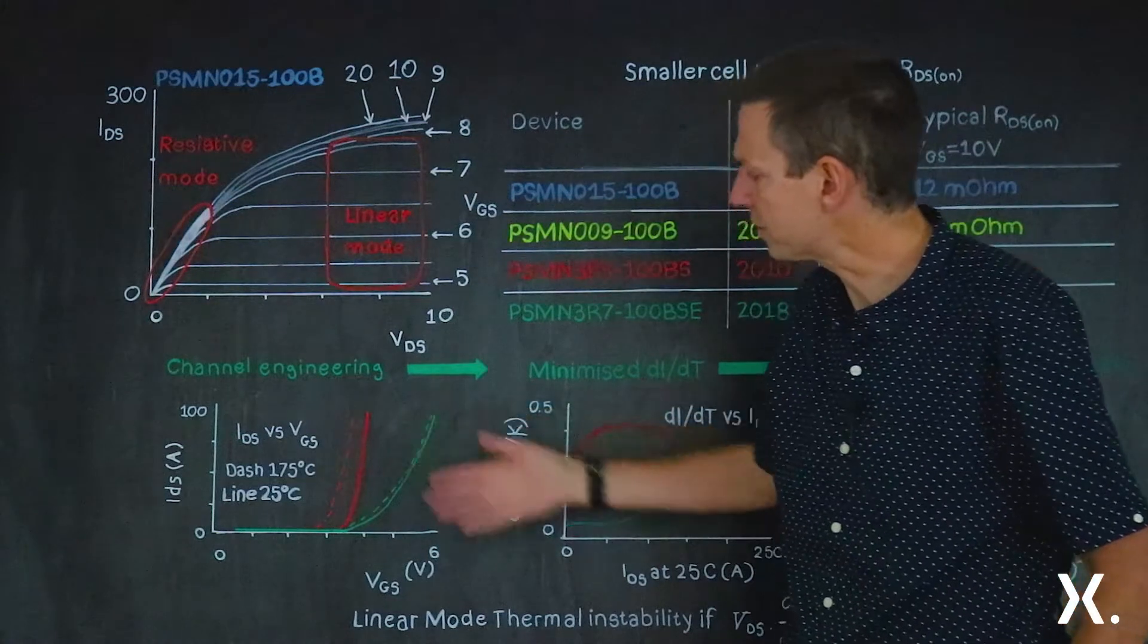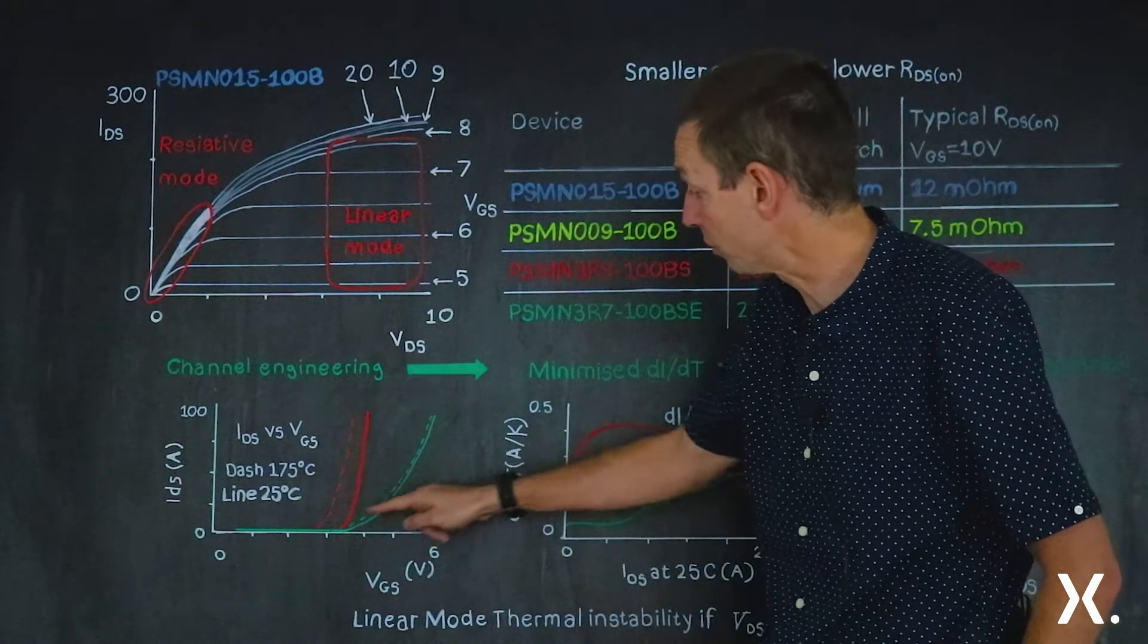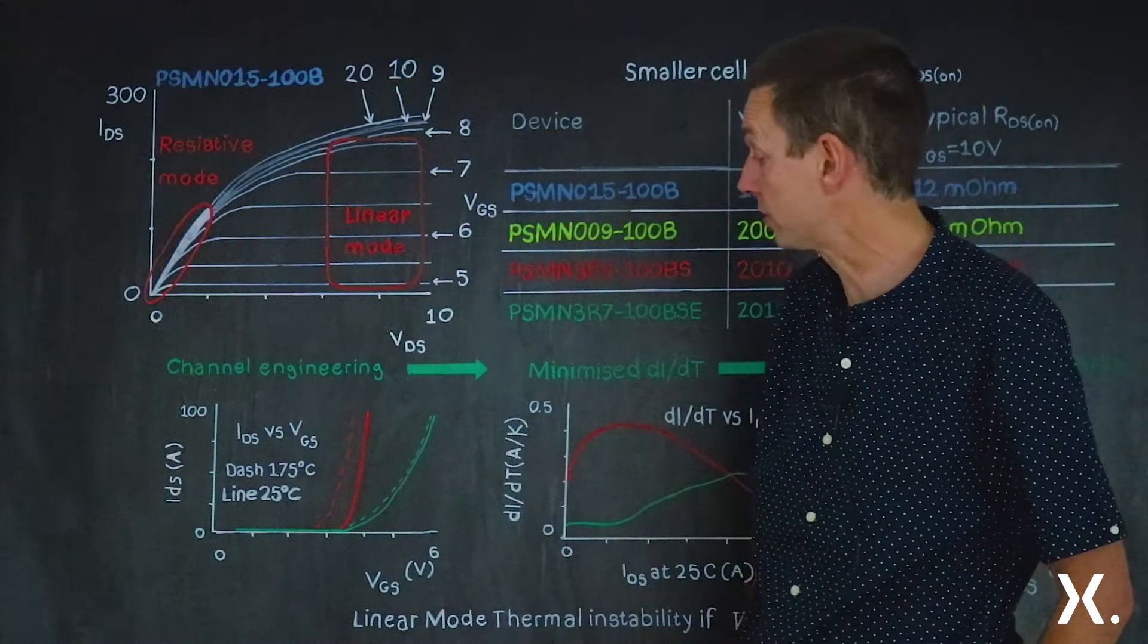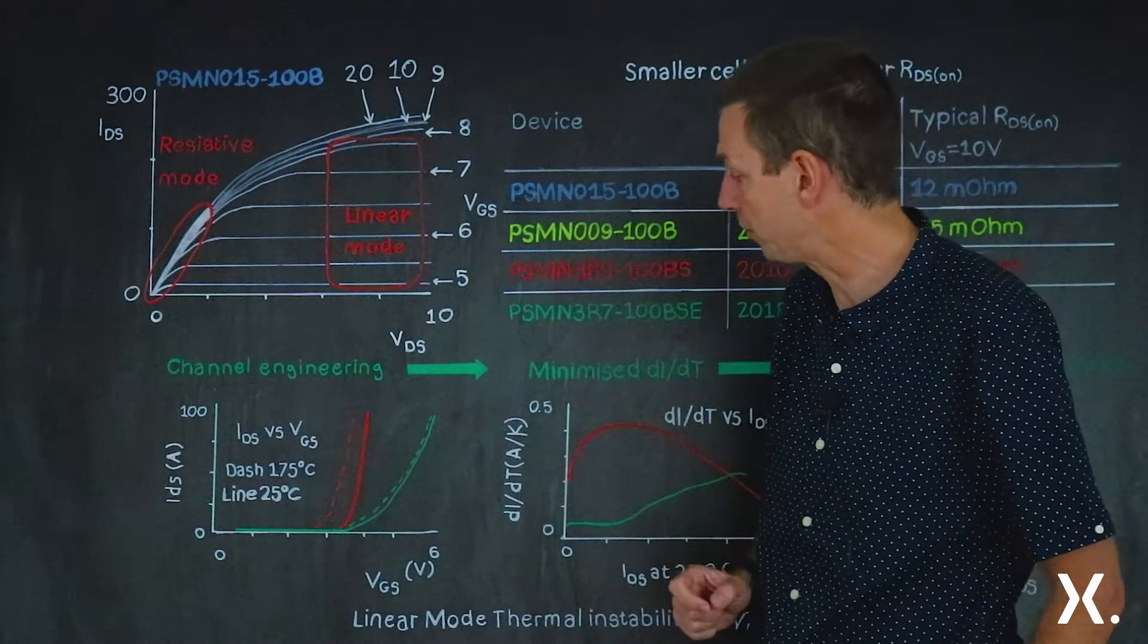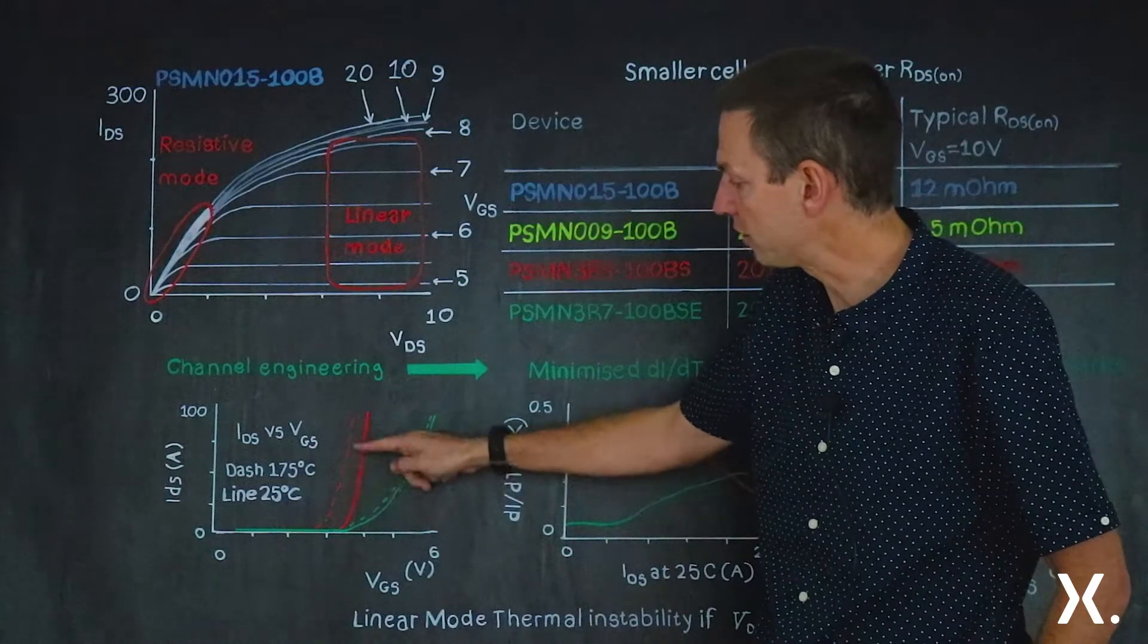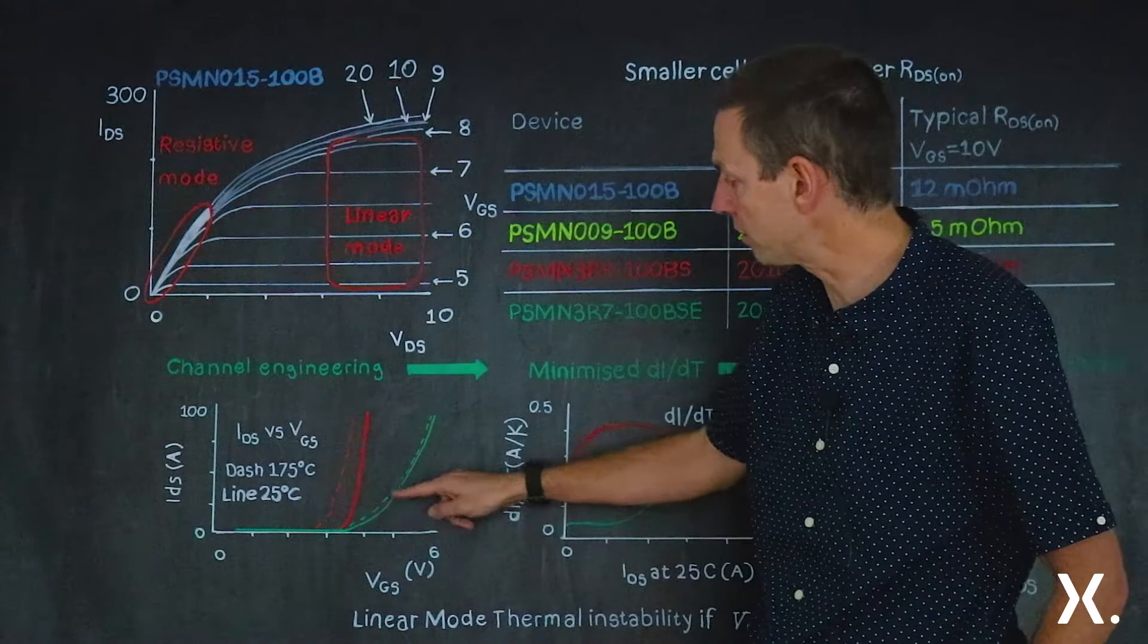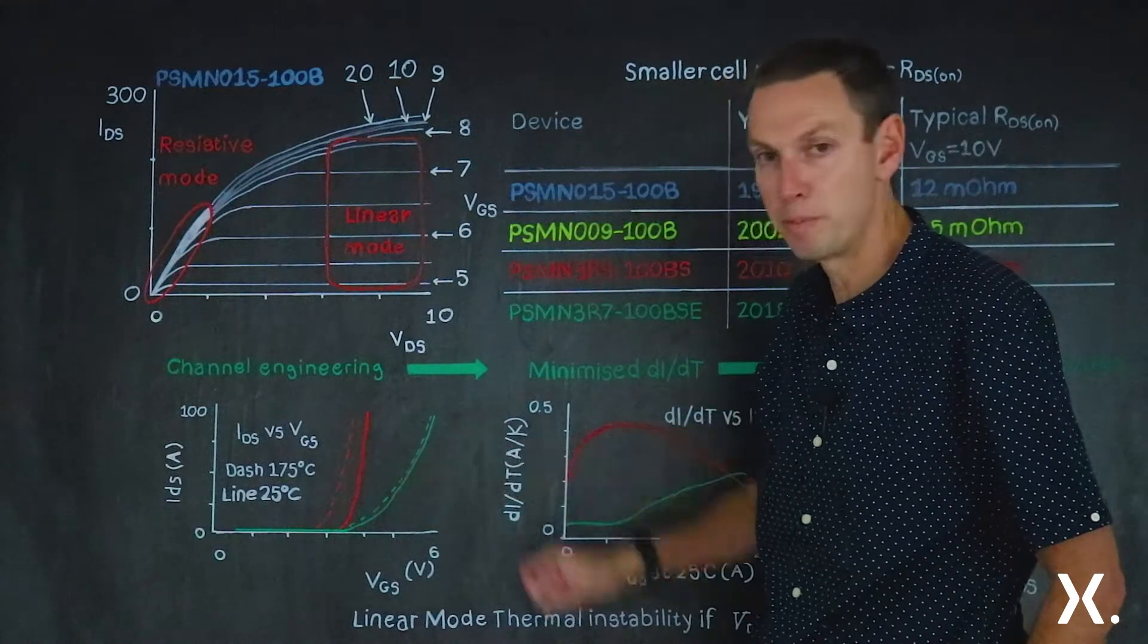And what you can see is, in one sense, they're still the same. We've got a 25-degree Celsius characteristic and a dotted 175-degree Celsius characteristic. But what you should be able to see, clearly with the eye, is where there was a high change in the current, high DI-body-T for the old red device, with the green device, the DI-body-T has been minimized.